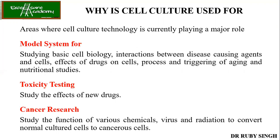If a drug kills both normal cells and cancer cells, you cannot use it, because once inside the body it will also kill normal cells, which is harmful to the individual. That's why you need to study the drug on both control cells and cancer cells. Next is toxicity testing — to check whether the drugs you have made are going to be toxic. To test toxicity you use normal control cells, because if you are going to administer these drugs, you need to know whether they will have any toxic effects on normal cells.